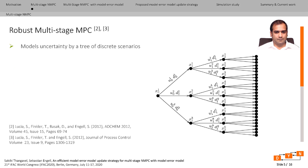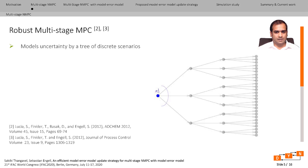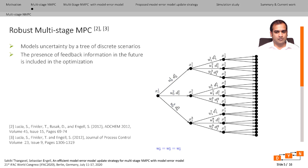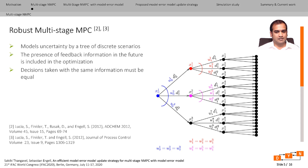The robust multi-stage NMPC models uncertainty by a tree of discrete scenarios. The current measurements become the root node of the scenario tree, which branches into different scenarios depending upon the realization of the uncertain parameters. At the next stage, measurement information becomes available and control inputs are computed accordingly. One should note that the controller should not anticipate the future realization of uncertainty before it is actually realized — that is, control decisions taken with the same information must always be the same, enforced using the so-called non-anticipativity constraints.